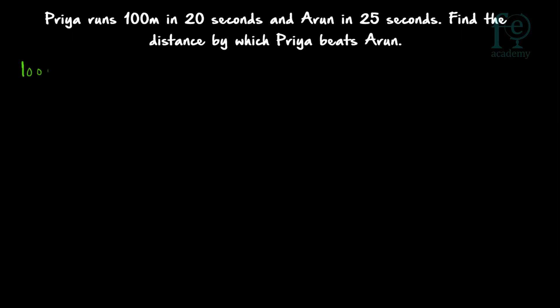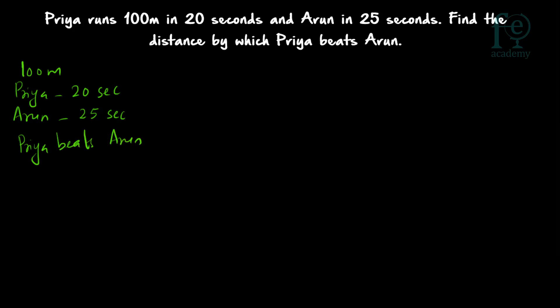There is a 100 meter race and Priya will be completing the race in 20 seconds and Arun will be completing the race in 25 seconds. You have to find out the distance by which Priya beats Arun. Here the time is given — Priya is taking only 20 seconds but Arun will be taking 25 seconds. That means Priya is beating Arun by 5 seconds.